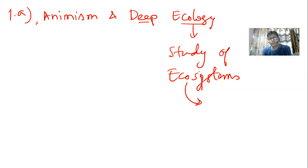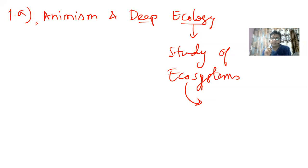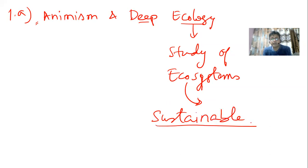An ecosystem is a network of interaction of living and non-living things in a given area — it can be a small area like a pond or a big area like the entire Indian Ocean — where living things like fishes, animals, humans, trees, plants, insects, algae, and bacteria interact with non-living things like air, water, oxygen, and nitrogen.